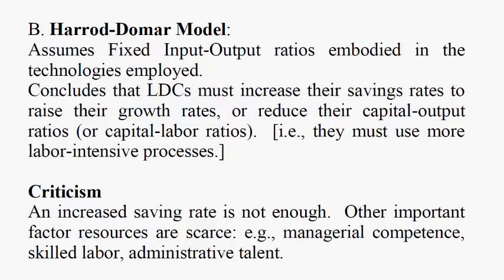The assumption is that technological change must occur, and often you can just adopt another technology from another country. The main criticism of the Harrod-Domar model is that an increased savings rate is not enough. Other important resources are scarce — managerial competence, for example, skilled labor and administrative talent. The Harrod-Domar idea of focusing on labor and capital is shown to be deficient because there are other key resources that are needed.